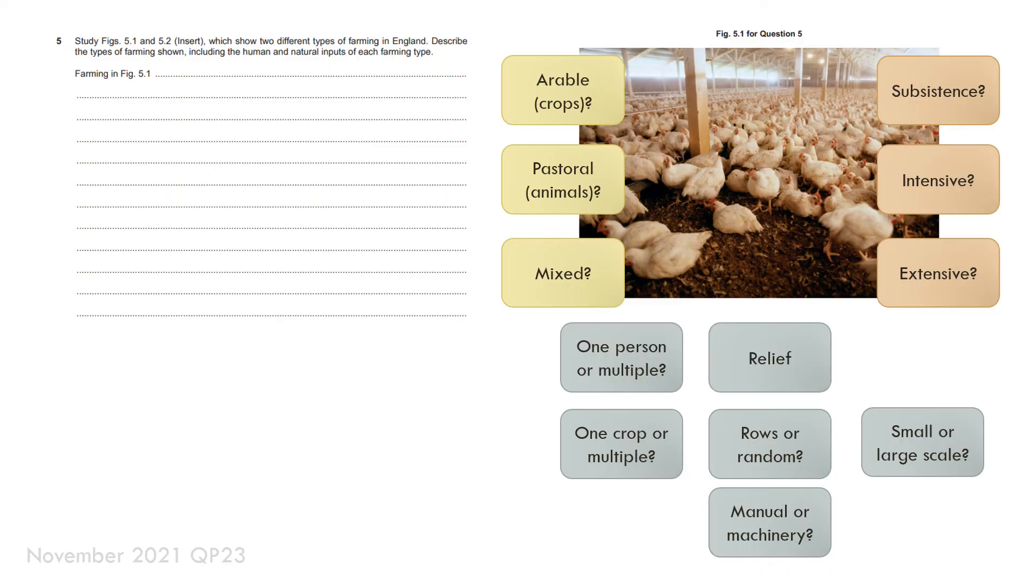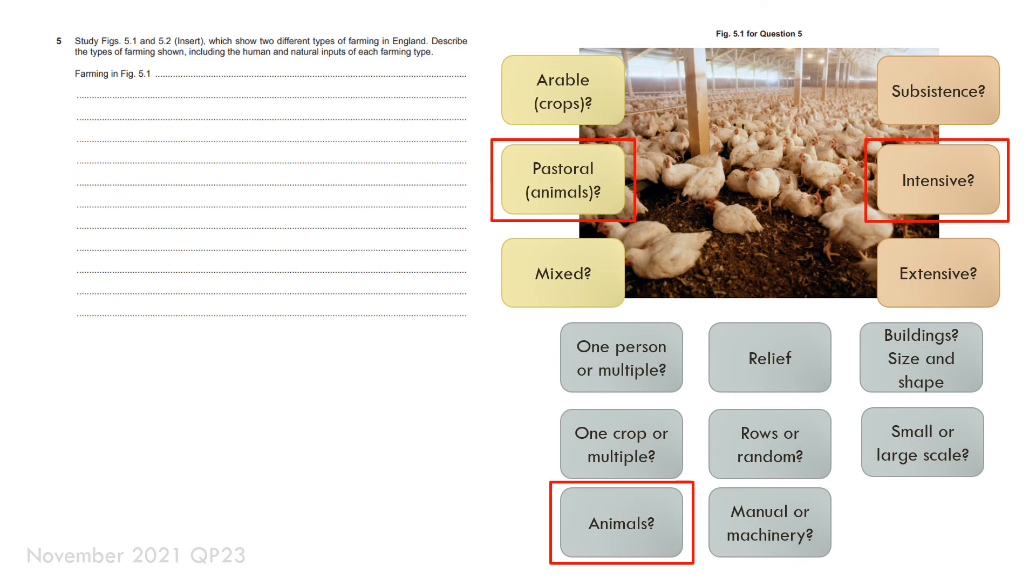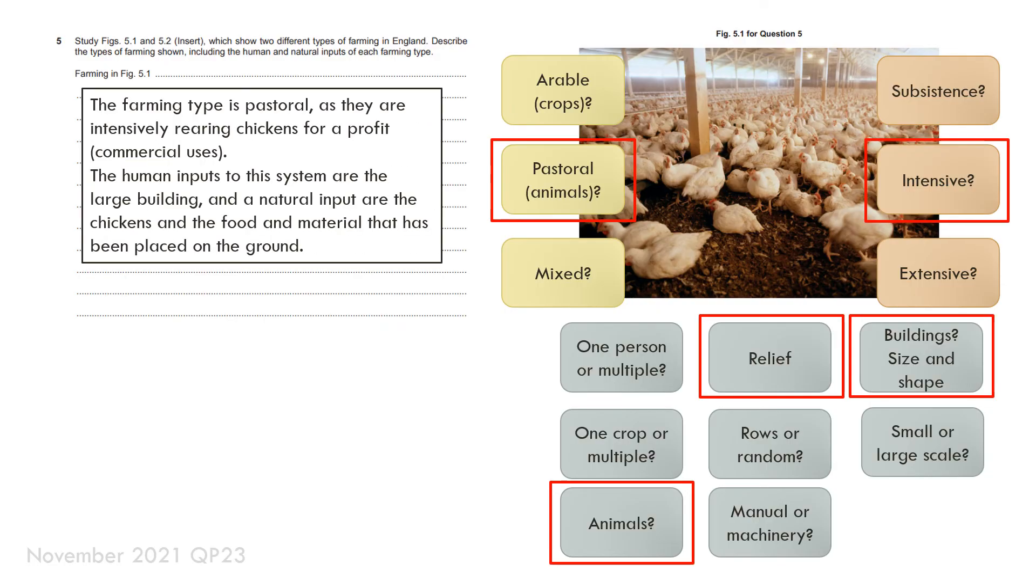For this I've got loads more things to consider. It's definitely pastoral animals so all the inputs involved with animals and it's grown intensively on flat lands. The farming type is pastoral as they're intensively rearing chickens for a profit commercial uses. The human inputs of the systems are the large building as you can see and the natural input are the chickens and the food and material that has been placed on the ground.